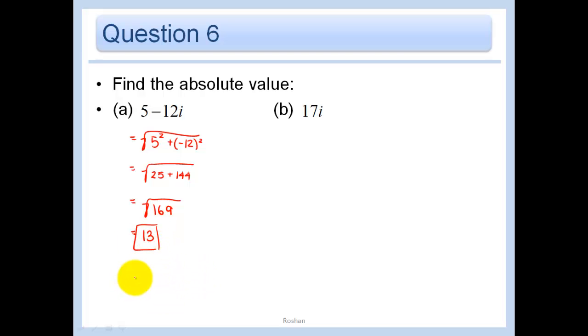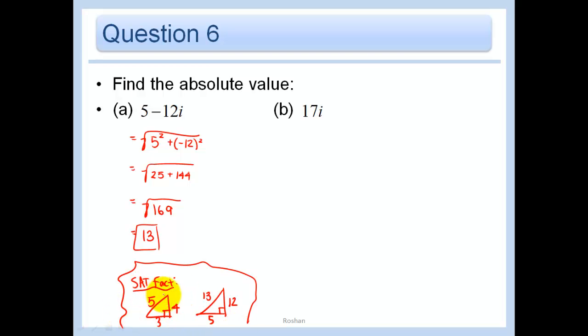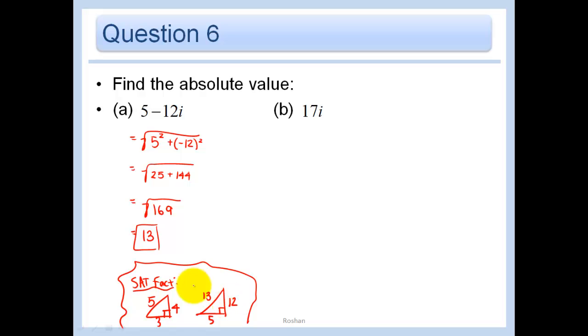By the way, little SAT fact. There are a couple of right triangles that they often put on the SAT. And one of them is this 3, 4, 5 right triangle because 3 squared plus 4 squared equals 5 squared. And the other common one that they put on there is the one that we just found where one side is 5 and the other side is 12 and the hypotenuse is 13. So you don't need to know that for anything except if you're going to take the SATs. These are good ones to know.